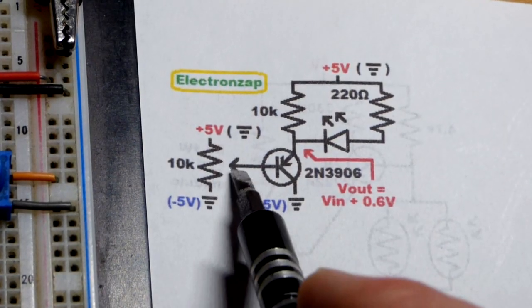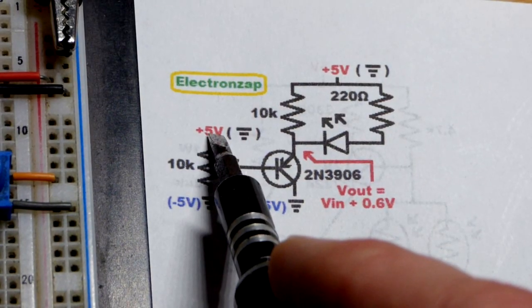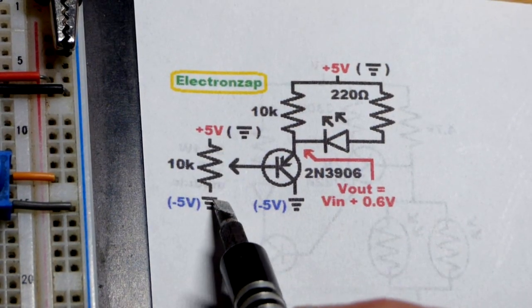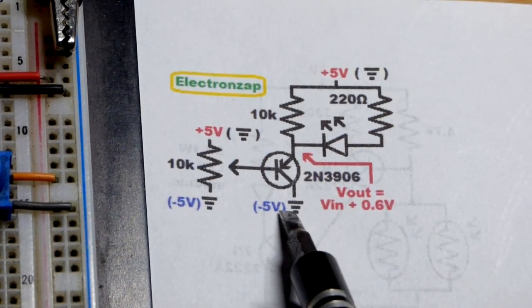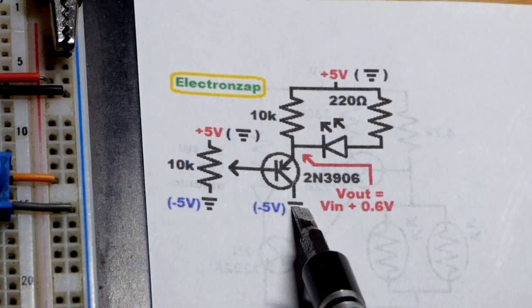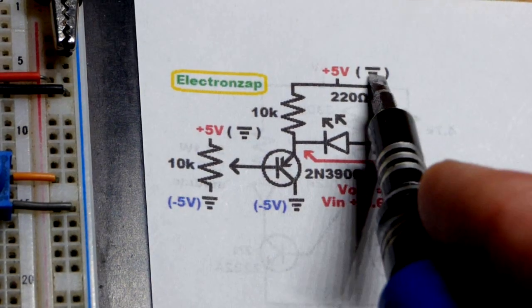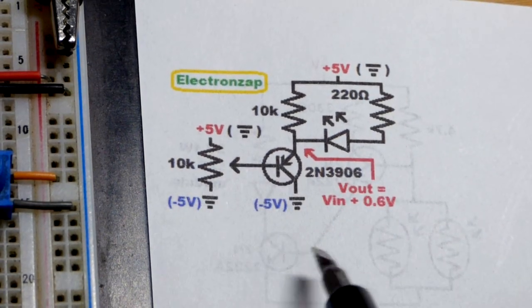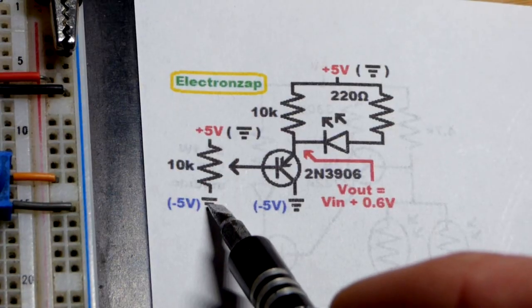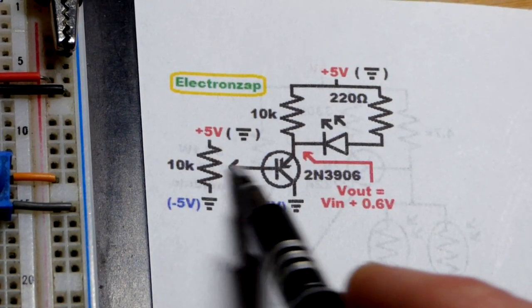We got a 10K trim pot right there. We are using 5 volts, so we got the positive supply, you can consider that 5 volts, and then ground down here. Since it's a PNP bipolar junction transistor, a lot of times instead of ground being the negative voltage, there's actually a negative voltage in relationship to ground. But we can just stick with positive as 5 volts and negative as 0 volts.